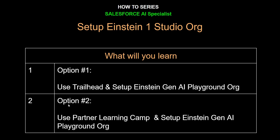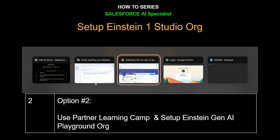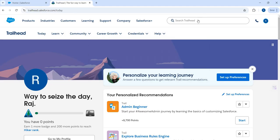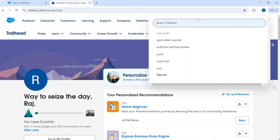Option two: if you are a Salesforce partner, you have access to Partner Learning Camp with materials to learn about Salesforce products. You can also create demo orgs pre-configured with products and sample data. If you're a partner, go with option two; otherwise, go with option one. Let's look at option one first — get into your Trailhead account.